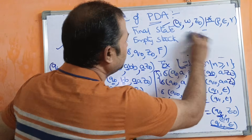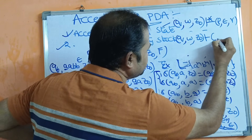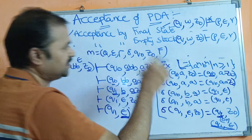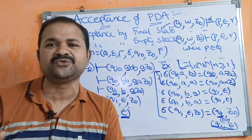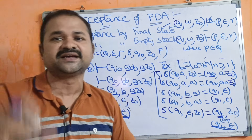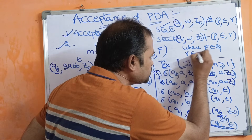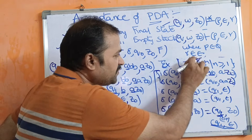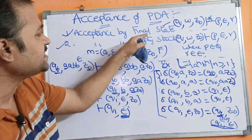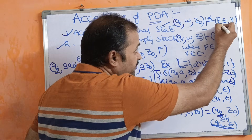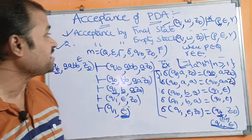Formally, for acceptance by empty stack: starting from the initial ID (q, w, Z₀), after many transitions (⊢*), if we reach (p, ε, γ) where p may be any state in the PDA — it may be q₀, q₁, q₂, or any state — and gamma must be empty (γ = ε), meaning the stack is empty, then we say the language is accepted by the PDA. In contrast, for the first approach (acceptance by final state), p must be a final state but γ may contain any number of stack symbols.